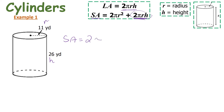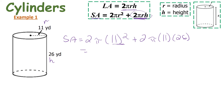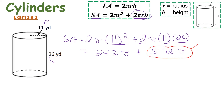Plugging in: 2 times π times 11 squared, plus 2 times π times 11 times 26. Simplifying: 11 squared is 121, and 121 times 2 is 242π — remember exponents first. Then 2 times 11 times 26 gives 572π, which is the lateral area in terms of pi. Combining like terms: 242 plus 572 is 814π.